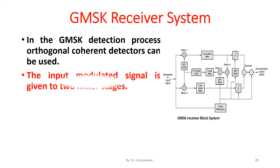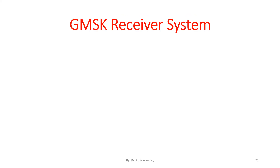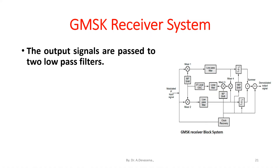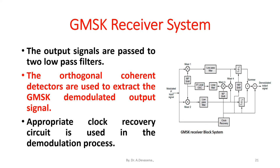In the GMSK detection process, orthogonal coherent detectors can be used. The input modulated signal is given to two mixer stages as represented in the block diagram. An IF local oscillator signal is applied: it is given directly to mixer two, and shifted by 90 degrees then applied to mixer one. The output signals are passed to two low-pass filters, and orthogonal coherent detectors are used to extract the GMSK demodulated output signal. An appropriate clock recovery circuit is used in the demodulation process.